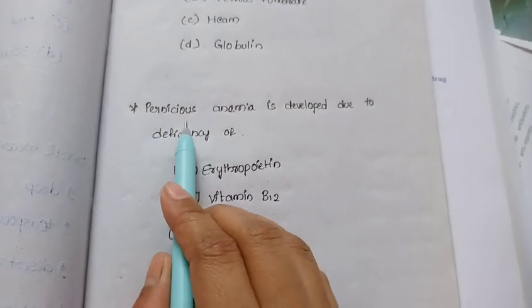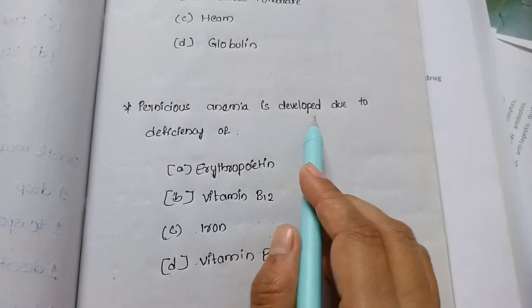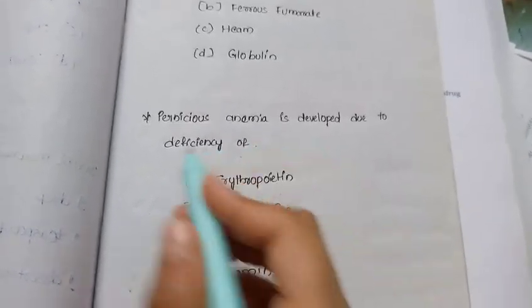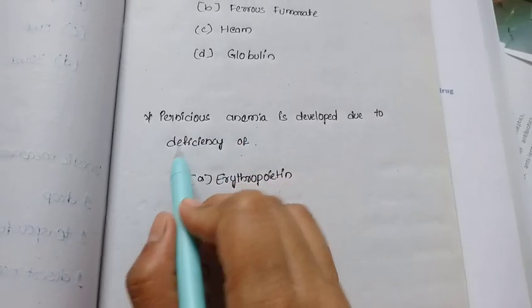Question 80 is, pernicious anemia is developed due to the deficiency of.